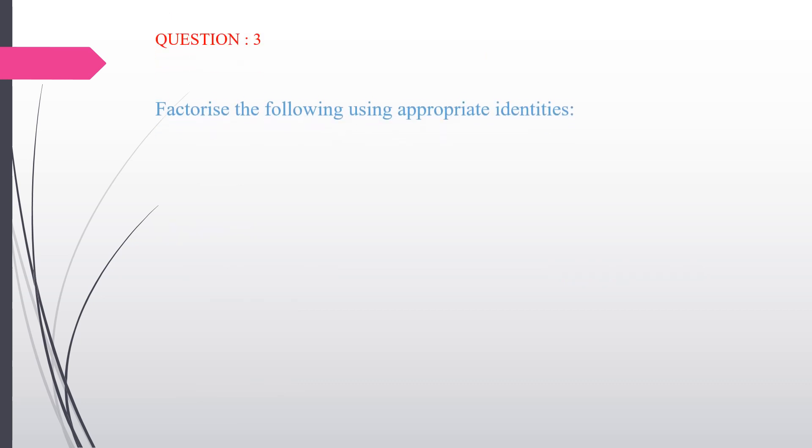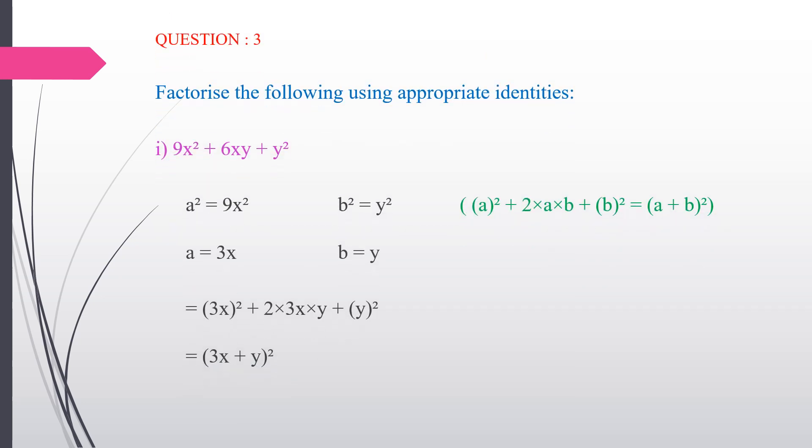Third question: factorize the following using appropriate identities. First subdivision: 9x² + 6xy + y². We use the identity a² + 2ab + b² = (a + b)². Here a² = 9x², so a = 3x, and b² = y², so b = y. Applying: (3x)² + 2(3x)(y) + y² = (3x + y)². The answer is (3x + y)².